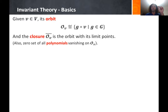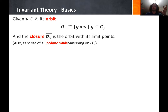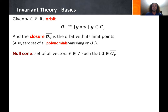Given a point V in the vector space, we define its orbit as the set of all points of the form g·V for g in the group. The closure of this orbit is the orbit with its limit points — equivalently, the zero set of all polynomials that vanish on the orbit. The null cone is the set of all vectors V such that zero is in the orbit closure of V — these are the elements equivalent to zero.